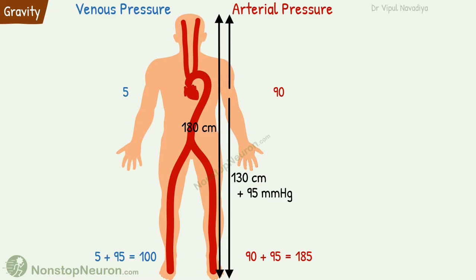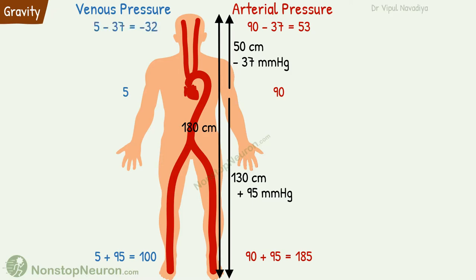As we go above the heart, the pressure decreases. The top of the head lies about 50 cm above the level of the heart. Because of this, the pressure here is about 37 mmHg less than at the level of the heart. So arterial pressure is 90 − 37 = 53 mmHg, and venous pressure is 5 − 37 = negative 32 mmHg. Yes, negative, because the pressure at the head is lower compared to the reference pressure at the level of the heart.